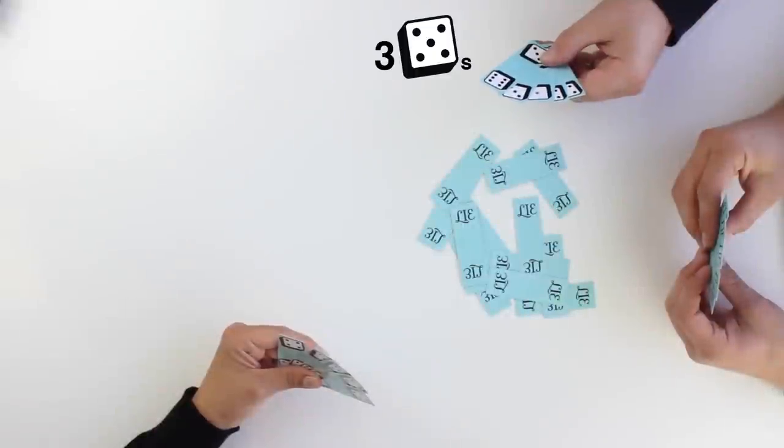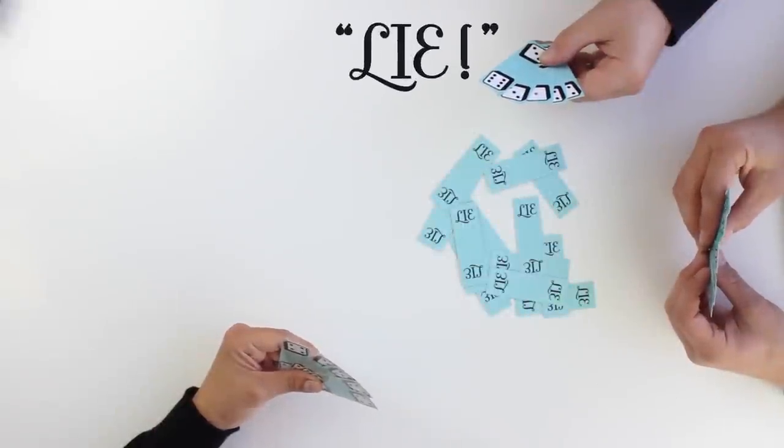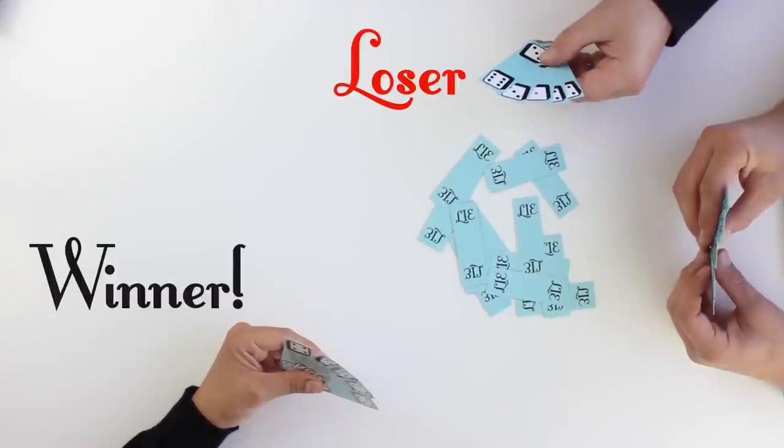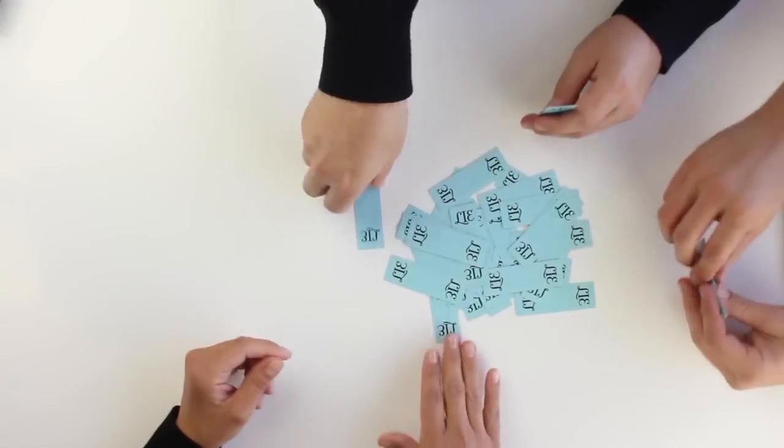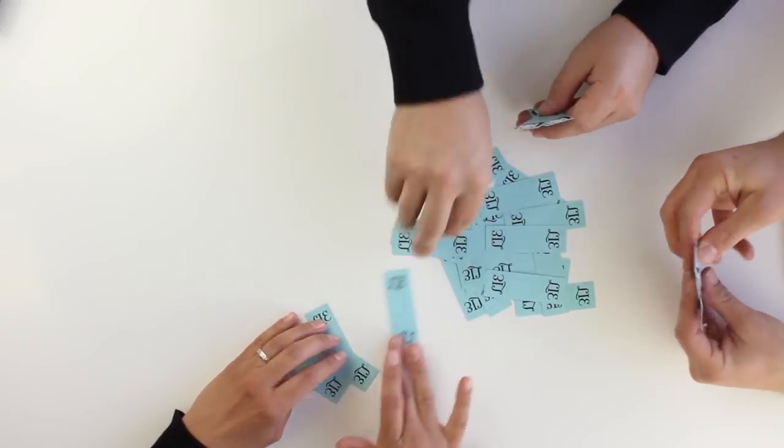Then, a sequence of player bids may occur in clockwise order until a bid is challenged and resolved. There will be a winner and a loser to each challenge. Then, the game round sequence will repeat until only one player is remaining in the game.